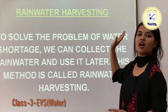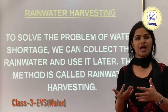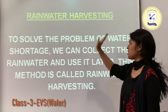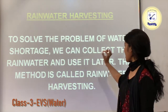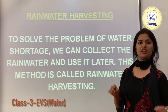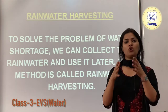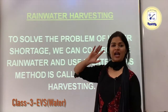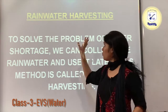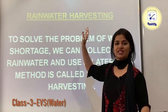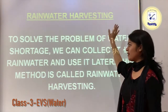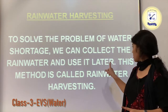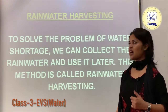Rainwater harvesting is a way to solve the problem of water shortage. We can collect rainwater and use it later. This method is called rainwater harvesting.